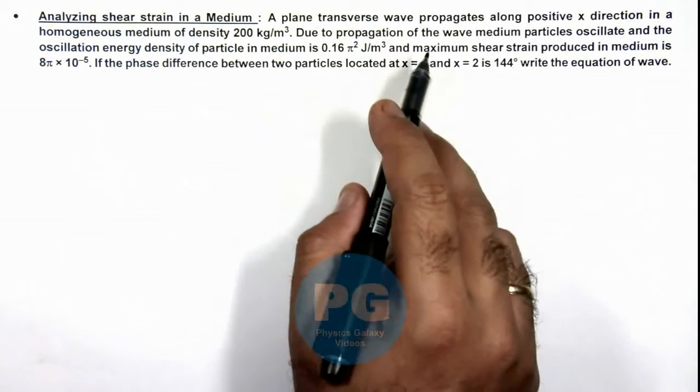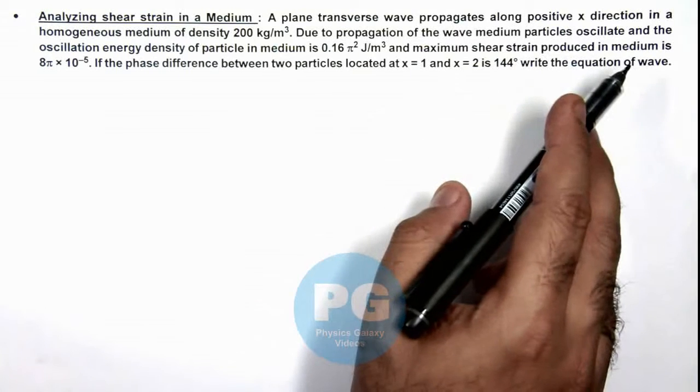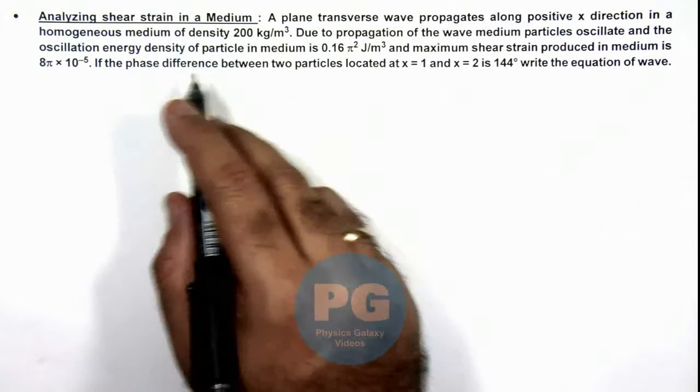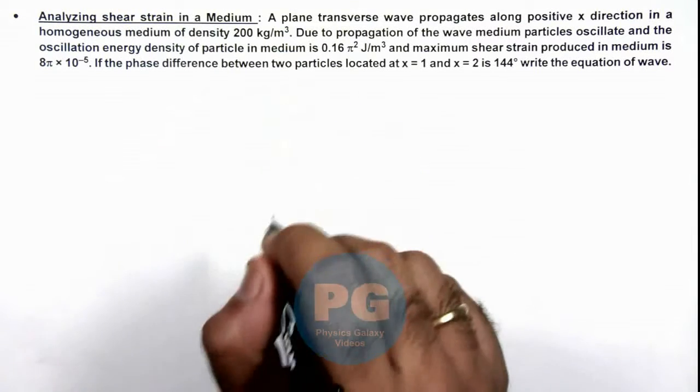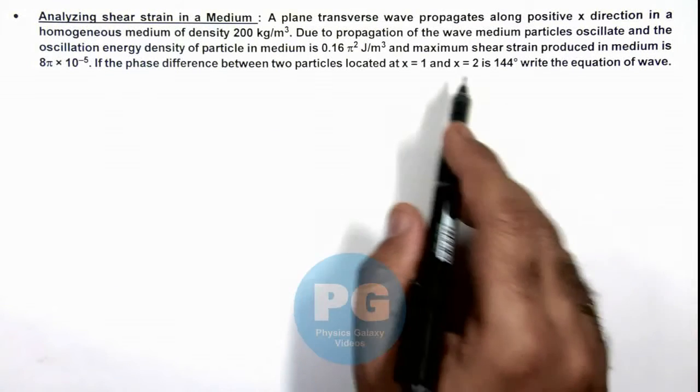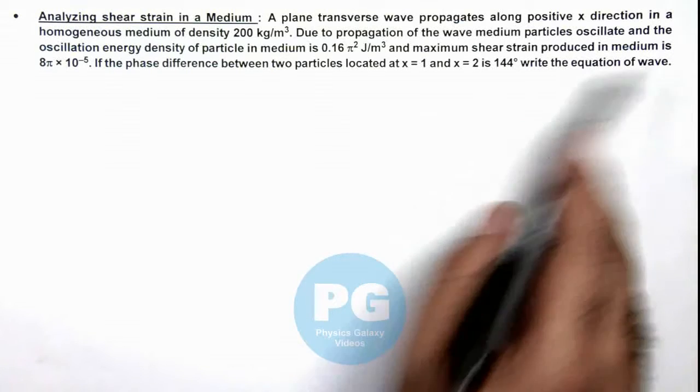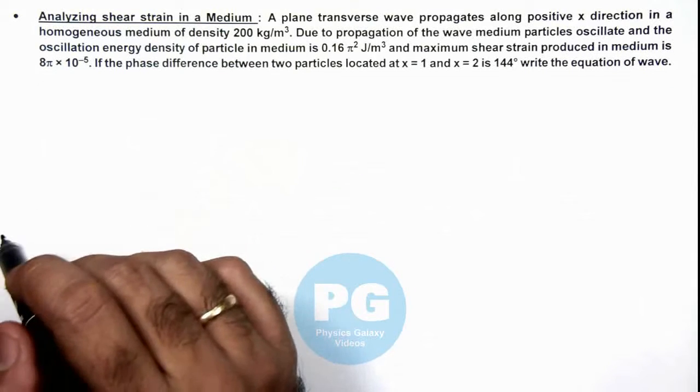And due to propagation of wave, medium particles oscillate and oscillation energy density of particles in medium is 0.16π² joule per meter cube, and the maximum shear strain produced in the medium is 8π × 10^-5.